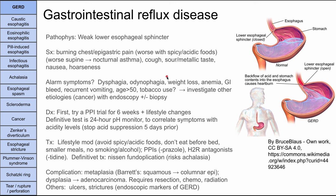This discomfort can be worse with spicy or acidic food — if something's spicy, it's going to burn more than if something is neutral. It can be worse when you're supine, when you're laying on your back, and this can lead to a nocturnal asthma presentation — somebody that has a cough or symptoms when they're lying on their back at night. Patients can also have a sour metallic taste, nausea, or hoarseness.